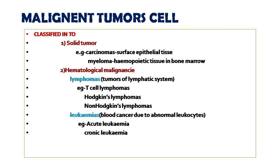The first type is solid tumor. The example of solid tumor is carcinoma — carcinoma means cancer occurring in epithelial tissue. Examples of solid tumors include lung cancer, breast cancer, cervical cancer, oral cancer, prostate cancer, and adrenal cancer. It is important to know that lung cancer is the most common cancer that kills males, while breast cancer is the most common cancer that kills females.